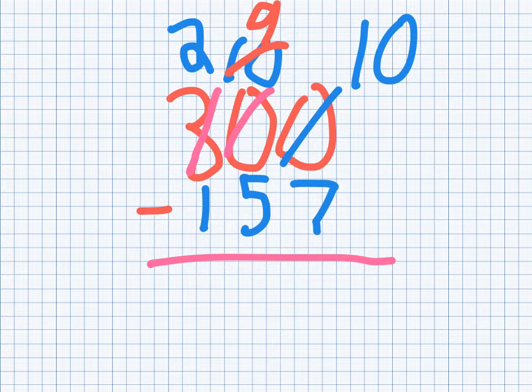So then, from the 10, I subtract 7, which will give me 3. And then, I do it from the 9, I subtract 5. So that gives me 4.